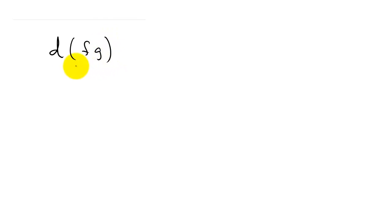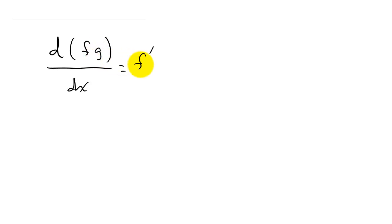Let's look at finding the derivative using the product rule, and we're going to work with trig functions this time. The product rule says: if we have two functions multiplied together and we take the derivative of f times g with respect to x, the derivative is the derivative of the first function times the second function, plus the derivative of the second function times the first function.